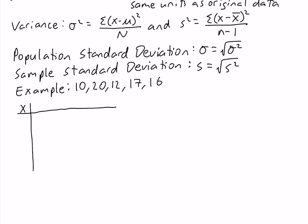In the first column of the table we're going to have the values 10, 20, 12, 17, and 16. Now the mean of these values is equal to 15.